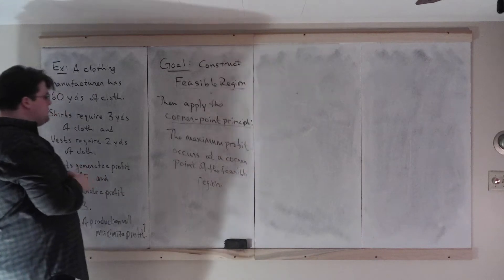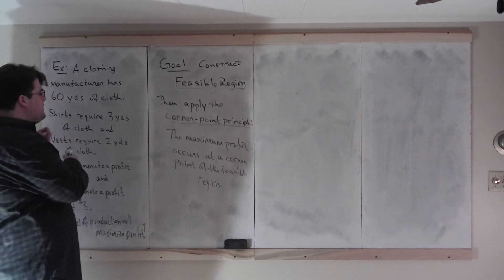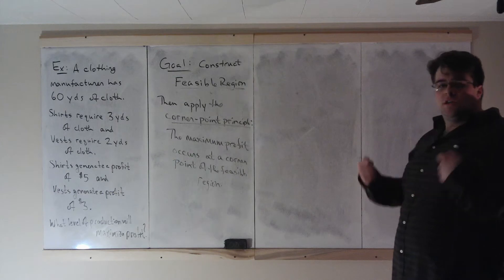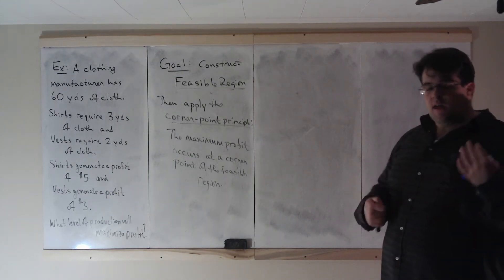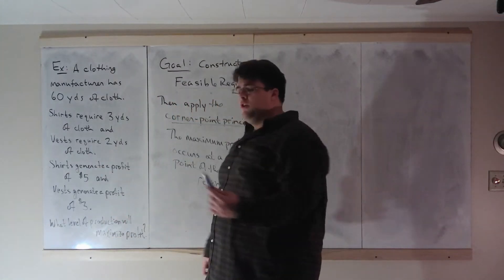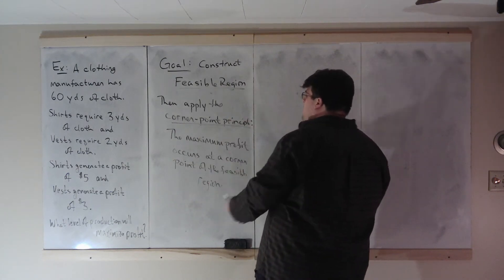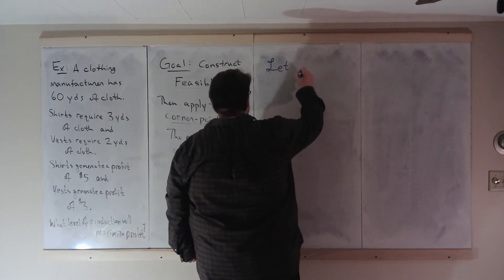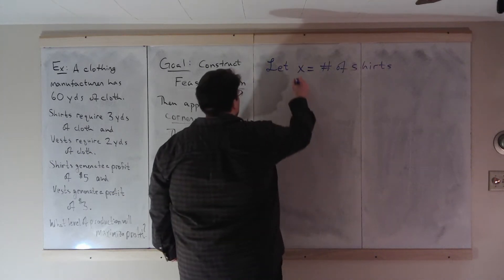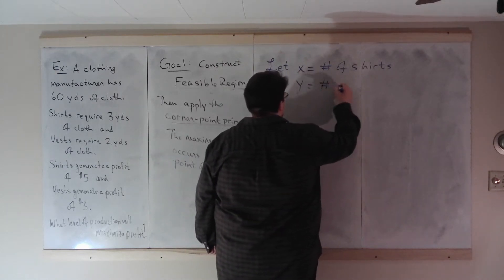So we're going to construct a feasible region, consider its corner points, and compare the profit at those corner points. The feasible region is a chunk of the Cartesian plane based on our constraint conditions. Our constraint here is that we have only a limited amount of cloth. To figure this out, I always like to clearly define the variables. So let x equal the number of shirts, and let y equal the number of vests.